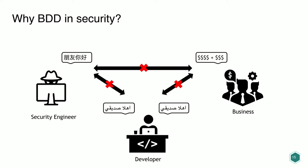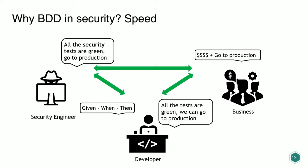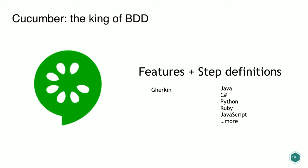Why use BDD for security? Right now, security engineers speak one language, developers another, and business can barely understand either. With BDD we fix communication using a Given/When/Then construction — developers write tests in the same language as the security engineer. We also fix speed: if developers write security tests that are validated by the security team, they can go to production much faster.